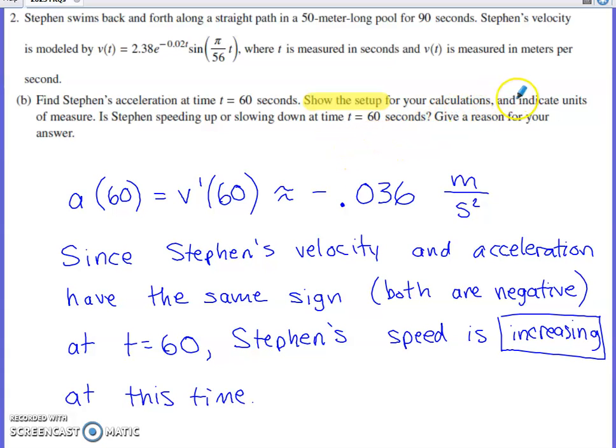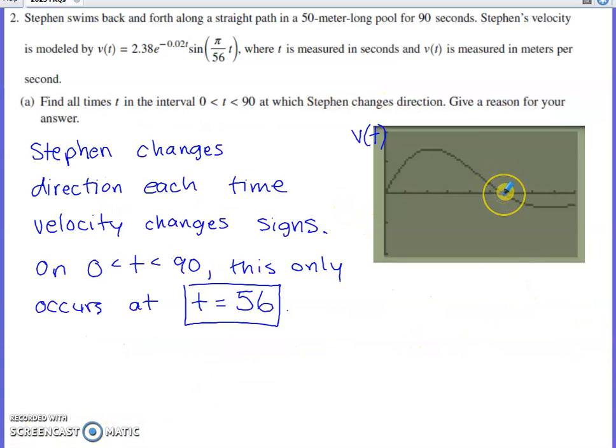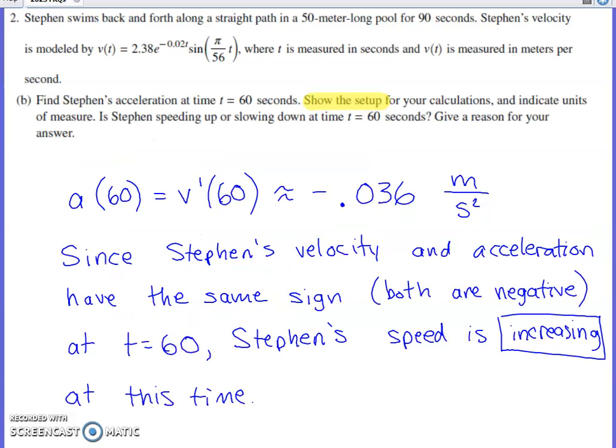It did explicitly ask for units. Indicate units of measure. So this is non-optional. And then is Stephen speeding up or slowing down at time 60? Give a reason for your answer. So if velocity and acceleration have the same sign, and in this case acceleration is clearly negative, and keep in mind where velocity changed from positive to negative was through the t value of 56. So the t value of 60 is on this stretch of the graph somewhere. So velocity is also negative. So since velocity and acceleration have the same sign at t equals 60, Stephen's speed is increasing at this time.